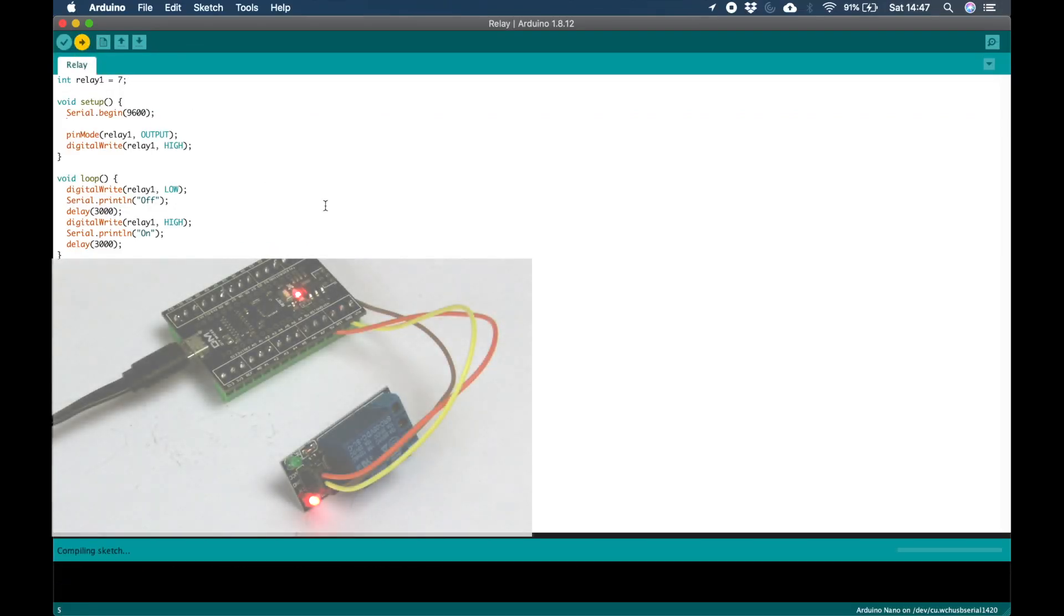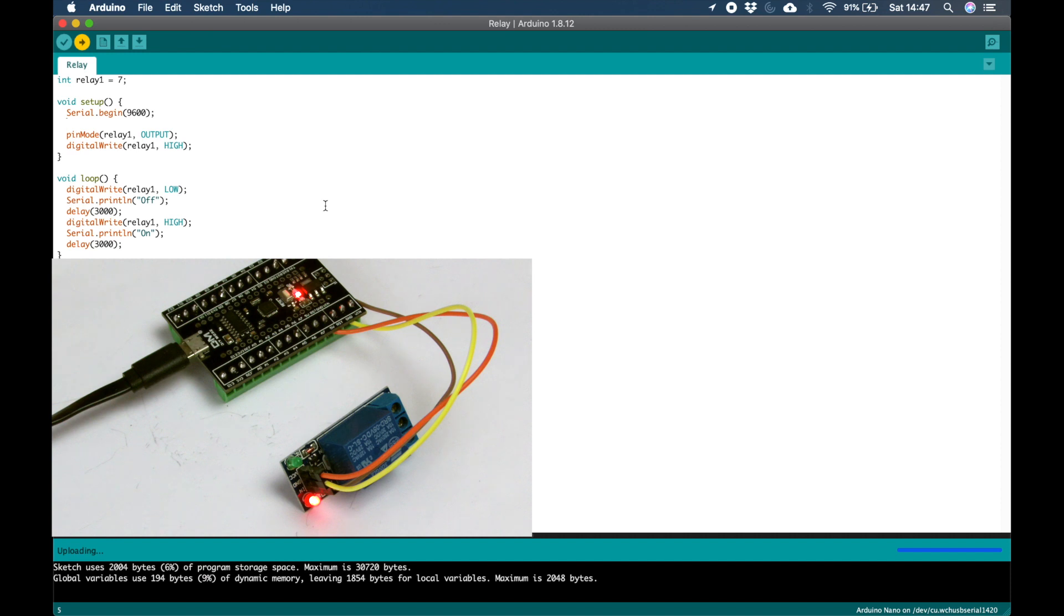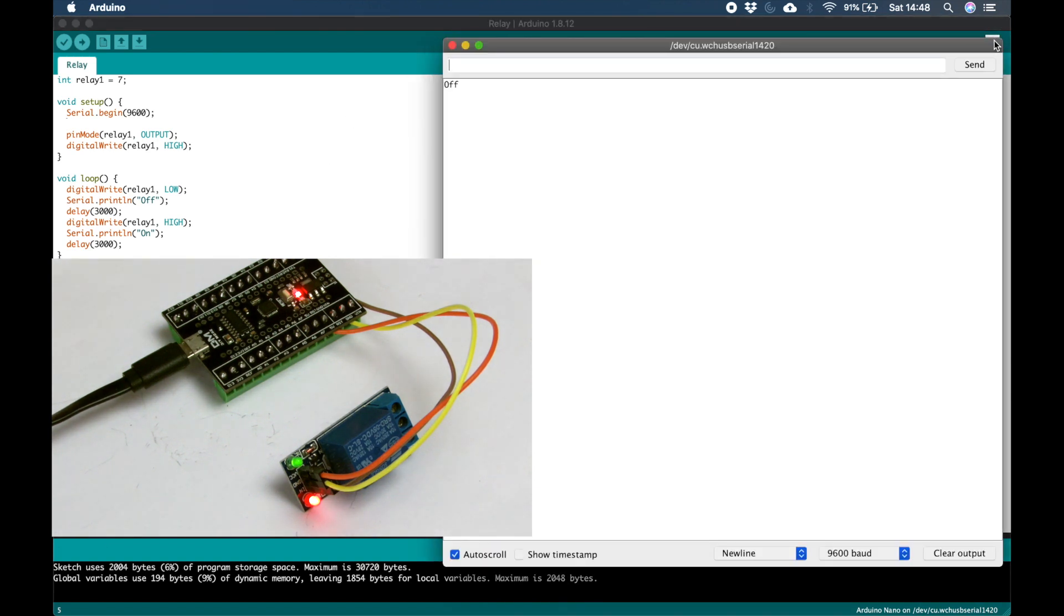At this point, we will upload the sketch to the Arduino Nano by clicking upload. This compiles the sketch and uploads it to the board. Once the upload is complete, you will immediately see the green LED toggling on and off, as the signal has been received from the Arduino at 3 second intervals.